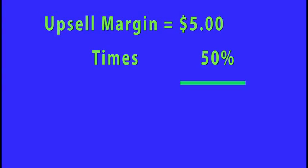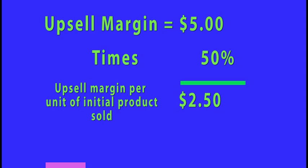and 50% of your customers buy the DVD when they purchase the exercise device, then the margin generated from the upsell per unit of exercise device sold is $5 times 50%, or $2.50.